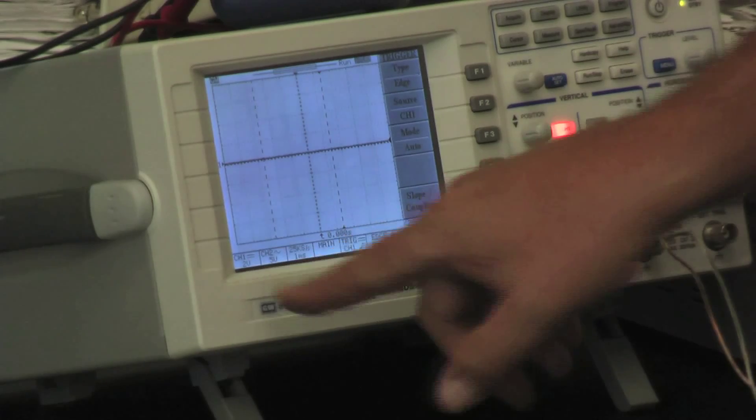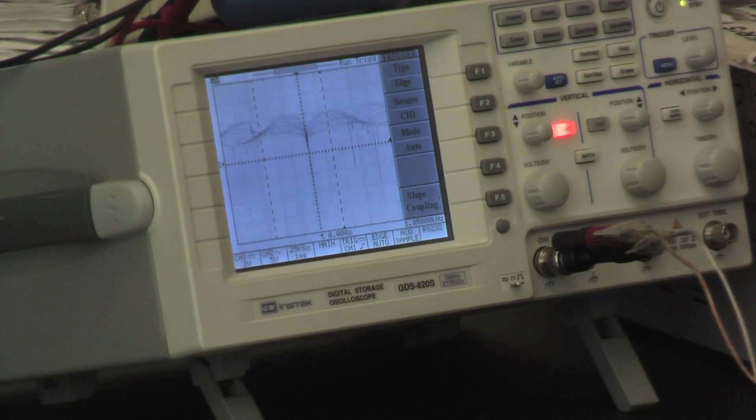So I have it on the 2-volt setting. You can see I'm generating right now about 4 volts. And if I spin faster, I can get up to between 5 and 6 volts.